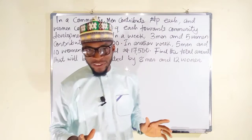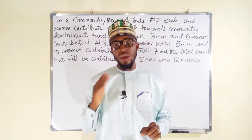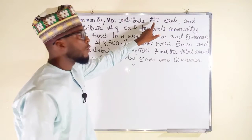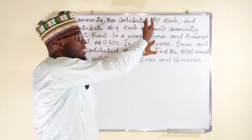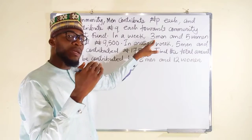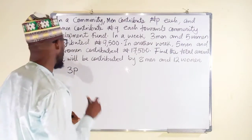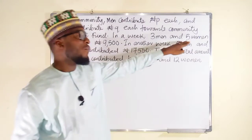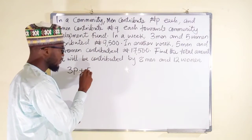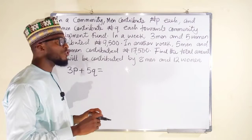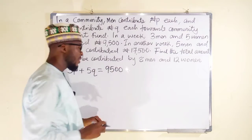We are asked to find the total amount that will be contributed by eight men and twelve women. To solve this problem we first need to find the exact amount contributed by each person. Each man contributes P naira, so three men contribute 3P. Plus five women each contributing Q naira gives 5Q. The total is nine thousand five hundred, so our first equation is: 3P + 5Q = 9,500.